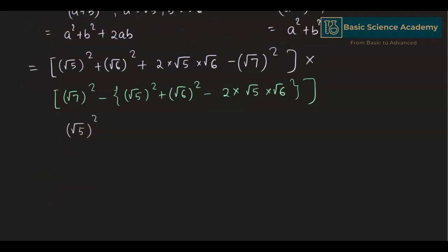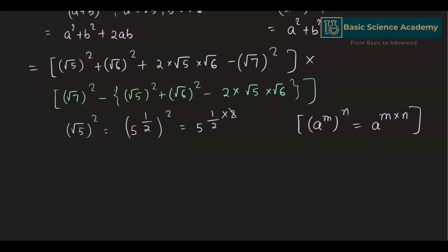We can write √5² as (5^(1/2))², which is in the form (a^m)^n. According to the law of exponents, this equals a^(m×n), so it becomes 5^(1/2 × 2). The 2s cancel to give 5^1, which equals 5. Hence √5² = 5 and √6² = 6.